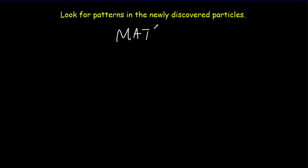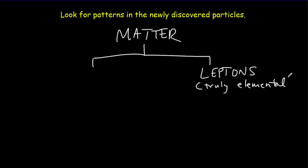You've got all of matter. All of matter can be broken down into two types of particles: leptons, which are truly elemental. That means they have no internal structure. Your classic example of a lepton would be an electron.